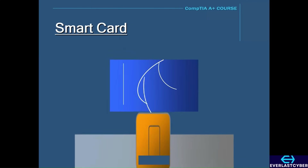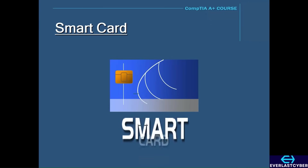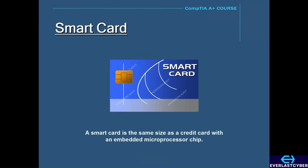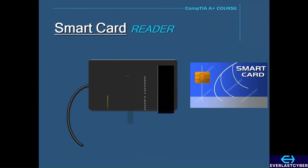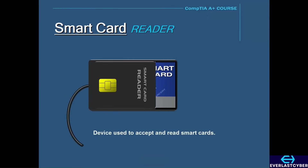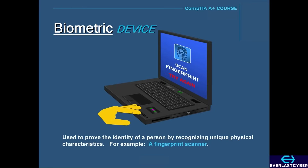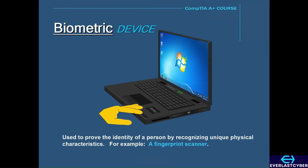One way to prove the identity of a person is by using a smart card. A smart card is the same size as a credit card with an embedded microprocessor chip, and a smart card reader is the device used to accept and read it. A biometric device proves identity by recognizing unique physical characteristics — an example is a fingerprint scanner, which has been built into many laptops and smartphones. You swipe your finger and it either grants or denies access.